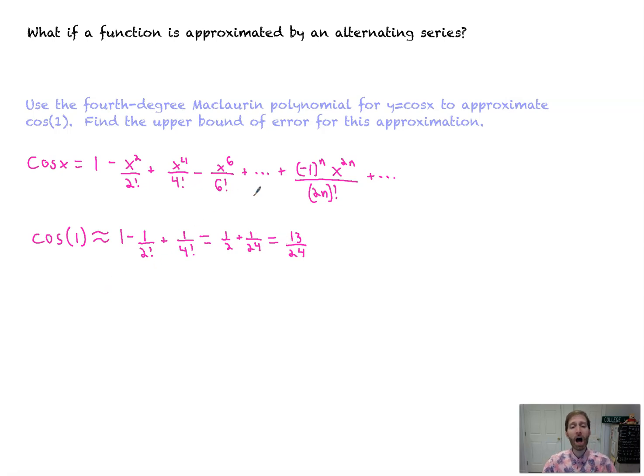So if we want the upper bound of error for this approximation, you could use the Lagrange error bound, but I think the easier way to go here is using the fact that the terms in this series are alternating and they decrease in absolute value to zero. So I would state that, since the terms decrease in absolute value to zero in this alternating series, the first ignored term will be the upper bound of error. I would state all that out if I'm doing a formal justification.